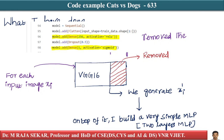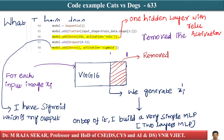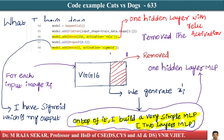I have one hidden layer with ReLU activation. If you observe, the model has model dot add dense with activation equal to ReLU, then I have a sigmoid output. This is a very simple one-hidden-layer multi-layer perceptron, and all the code is readily available.